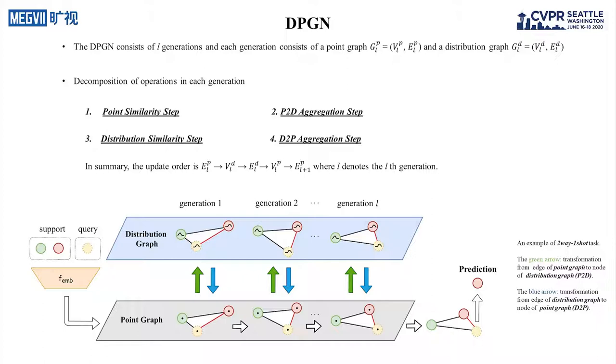Especially, we construct a dual-complete graph network, which consists of a point graph and a distribution graph, in which each node stands for an example.